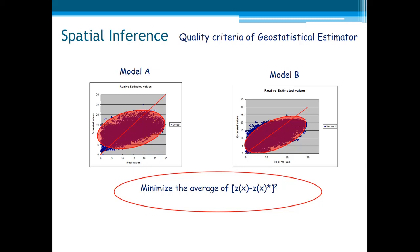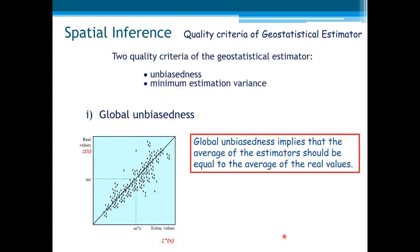So that's the second criterion. We would like our estimator to have less dispersed clouds between observed and real values, and more oriented toward the bisector. This can be obtained by minimizing the average of the squared differences between the real values and the estimators. In short, these are the two quality criteria we wish to impose on geostatistical estimators: unbiasedness and minimum estimation variance.